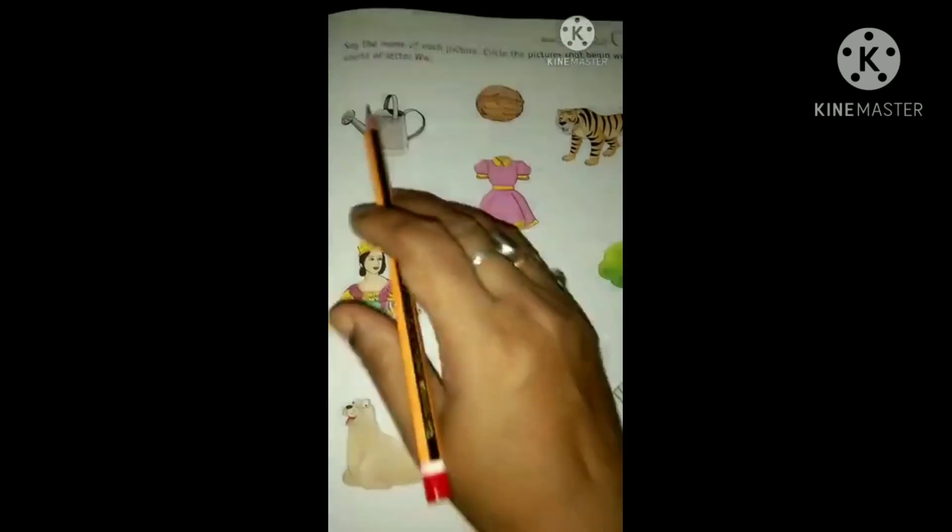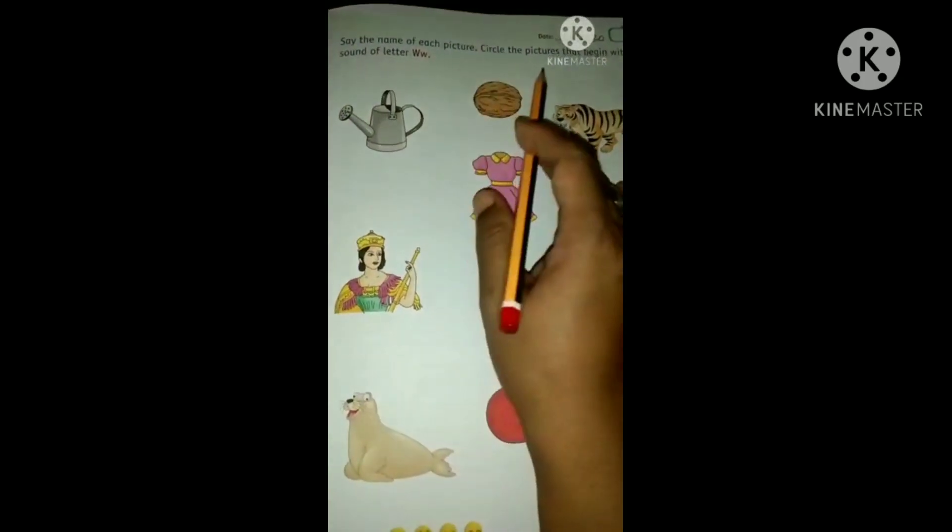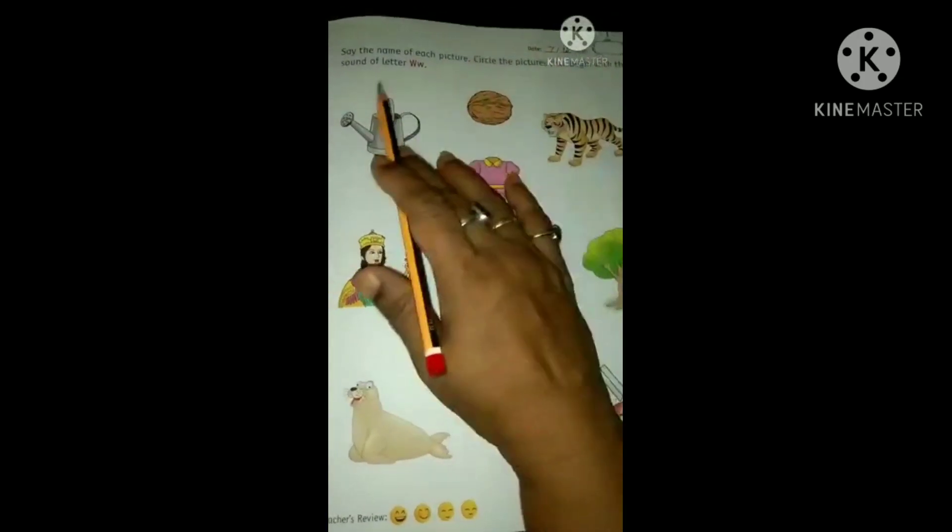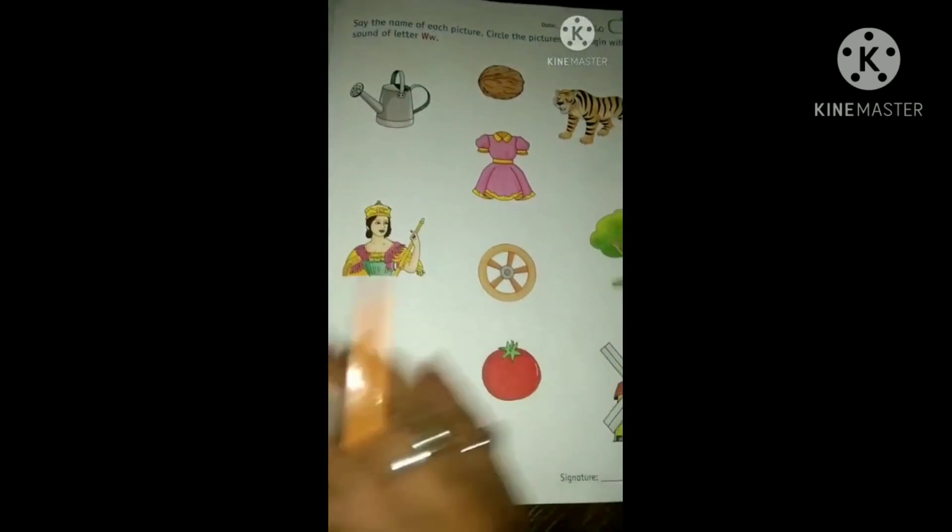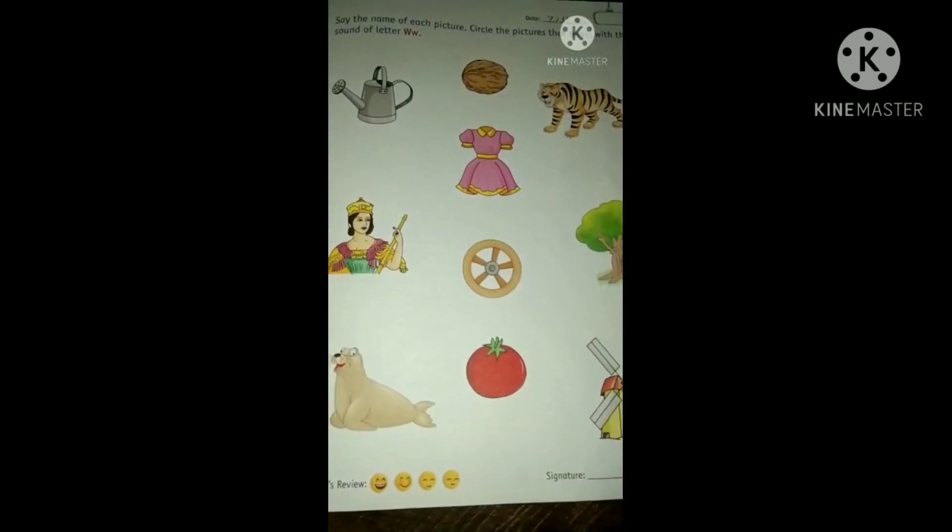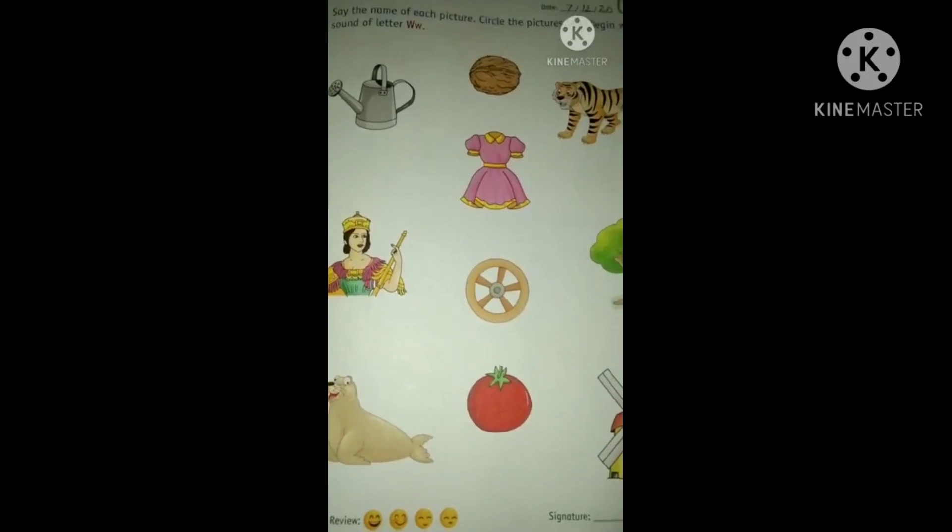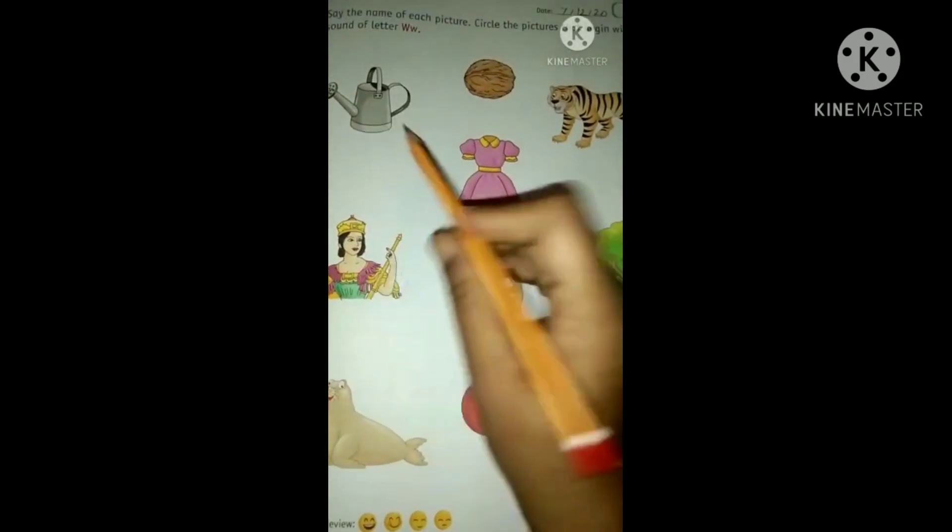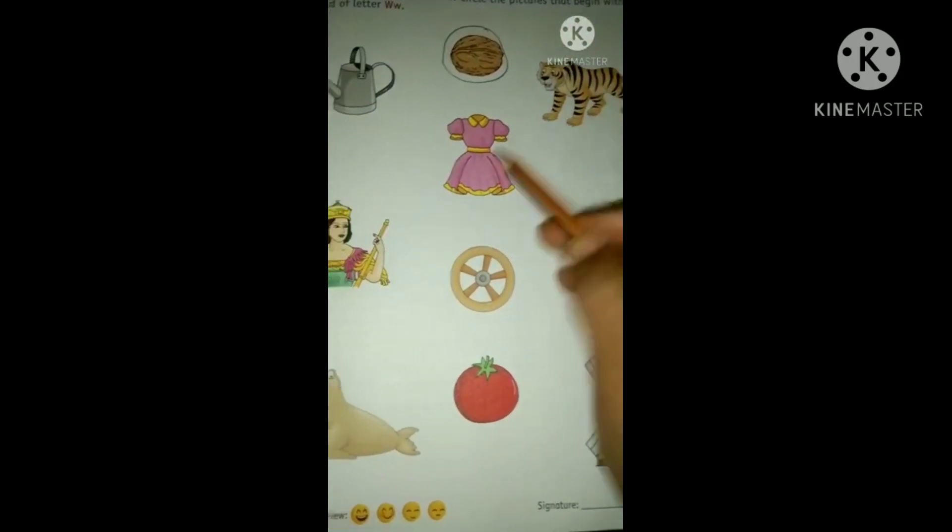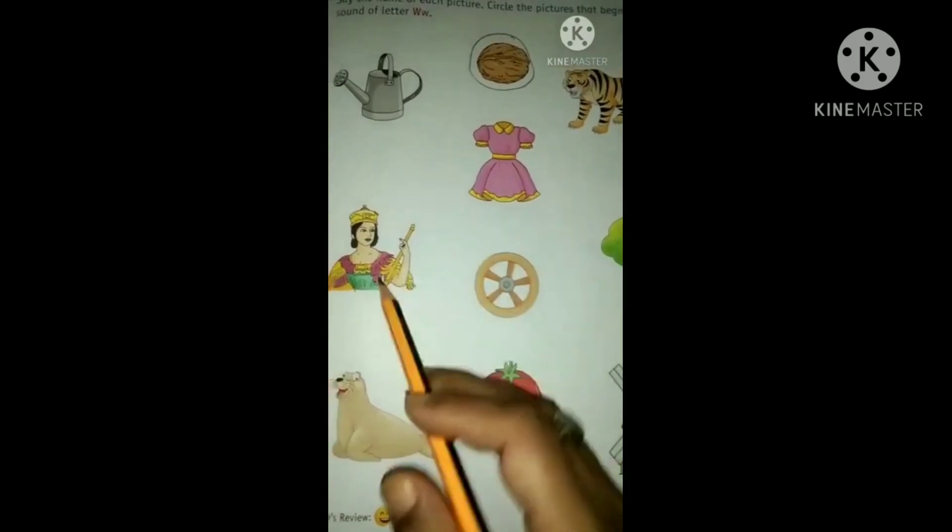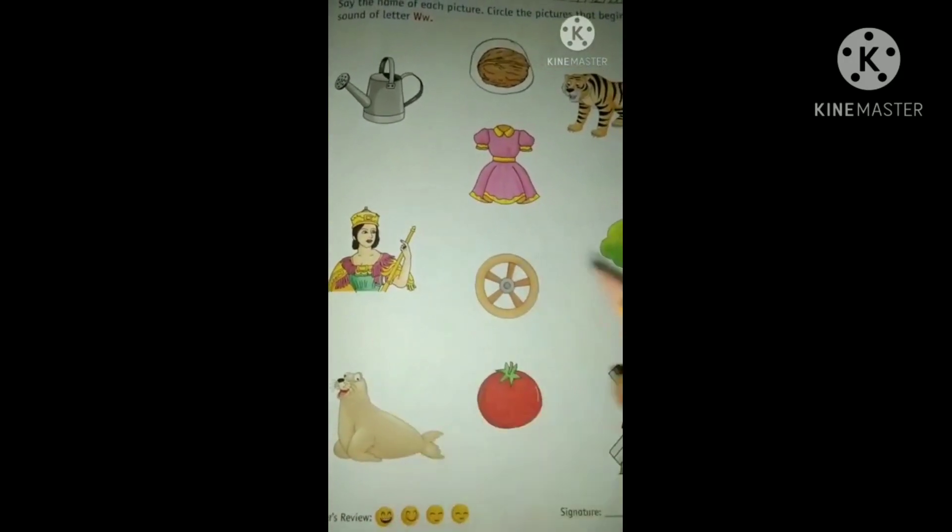Say the name of each picture. So, circle the pictures that begin with the sound of letter W. The thing which starts with W, we have to circle that. W for can, no. W for walnut. W for tiger, no. W for frog, no. W for queen, no.